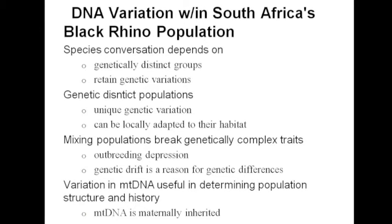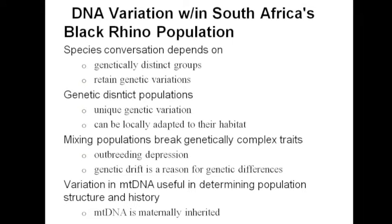This is the Bio 101 Group 4 project on limited mitochondrial DNA variations within South Africa's black rhino population and implications for management.